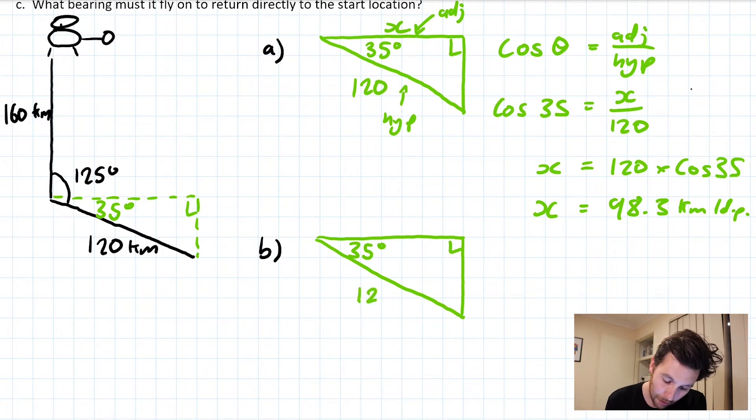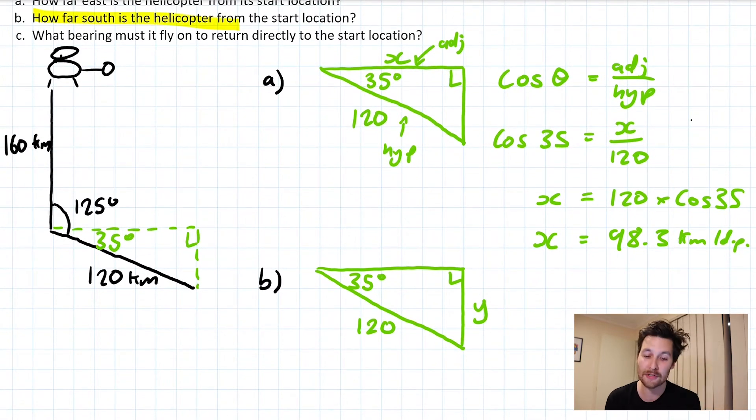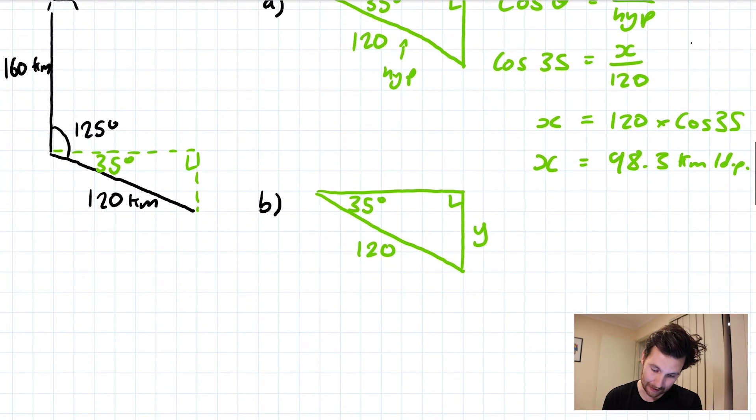What's different this time is that we're finding the length of a different side. We're interested in finding this side here because now we're looking at how far south the helicopter is from the start location. What we'll need to do for this one, to figure out how far south it's gone, is find this length on our triangle here and add it to the 160. But what I'll do just to kick us off, I'll find my missing side length here.